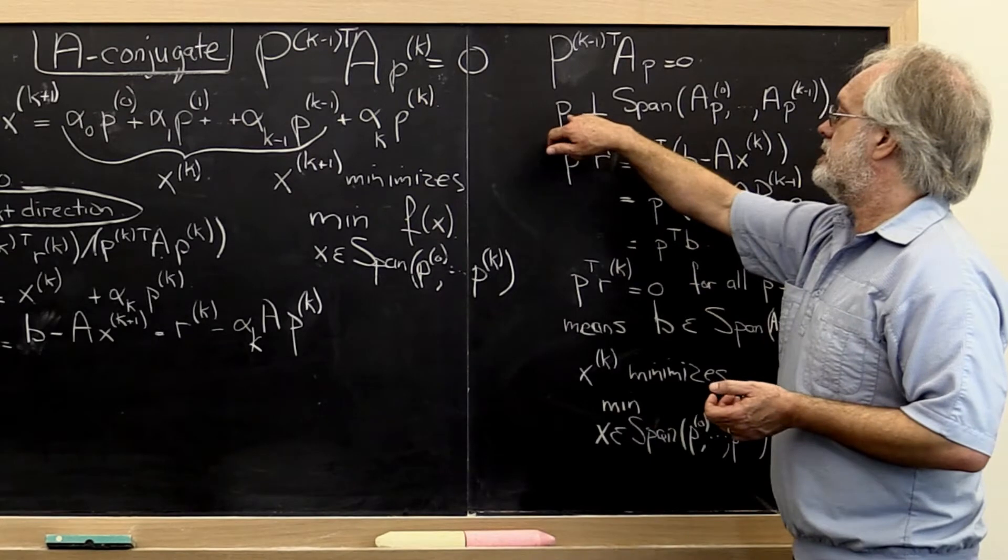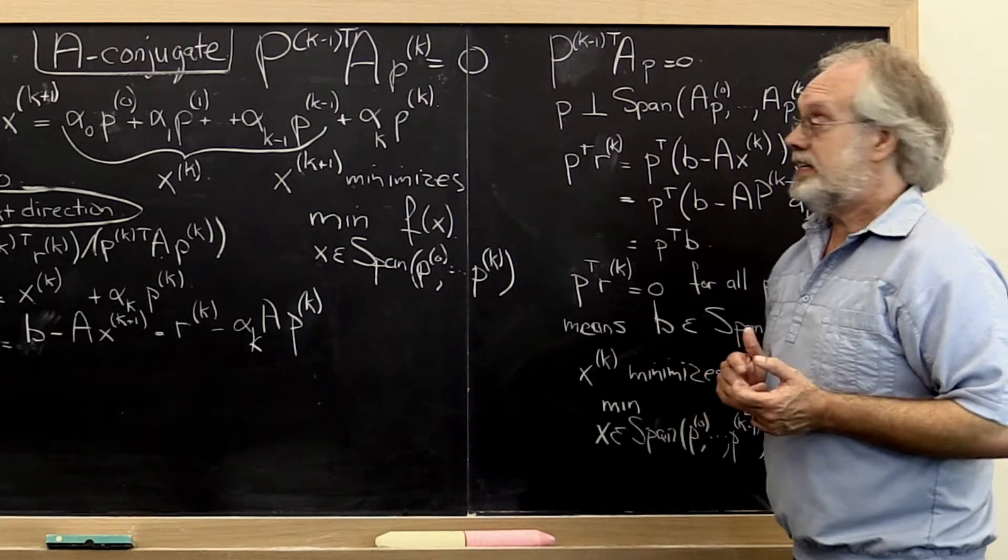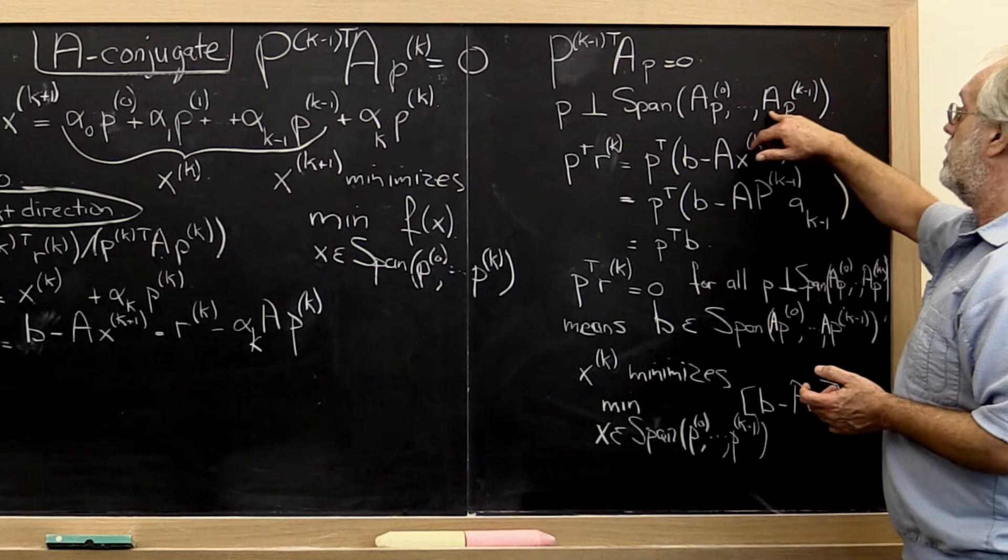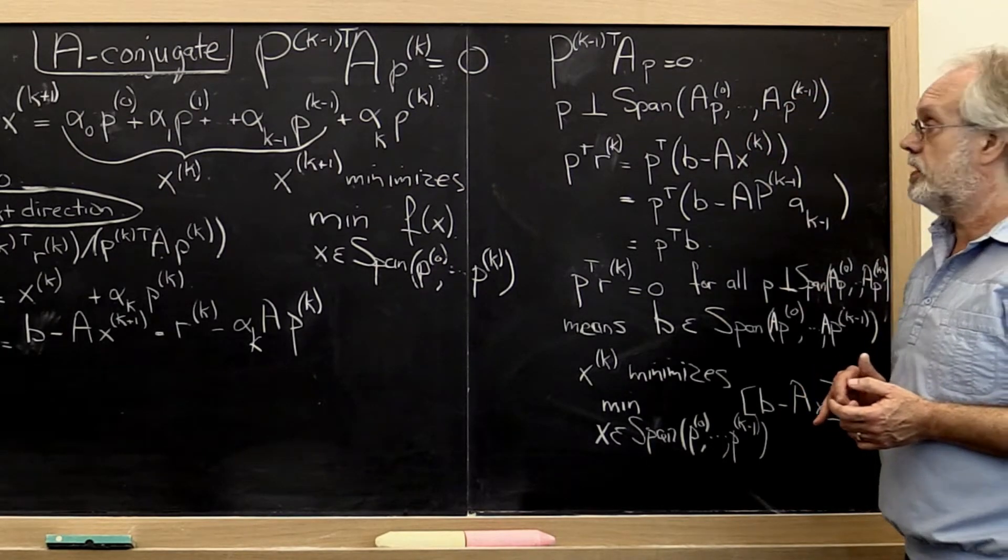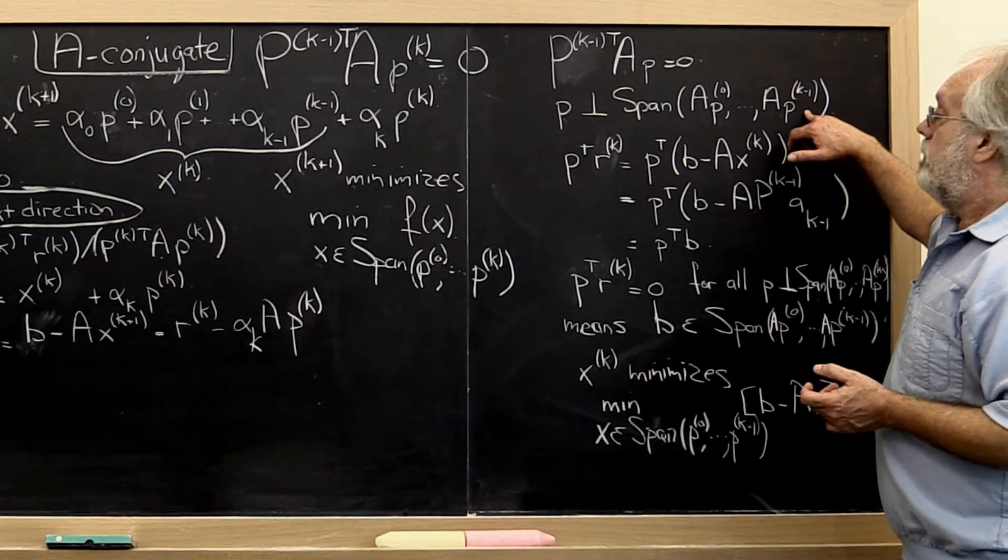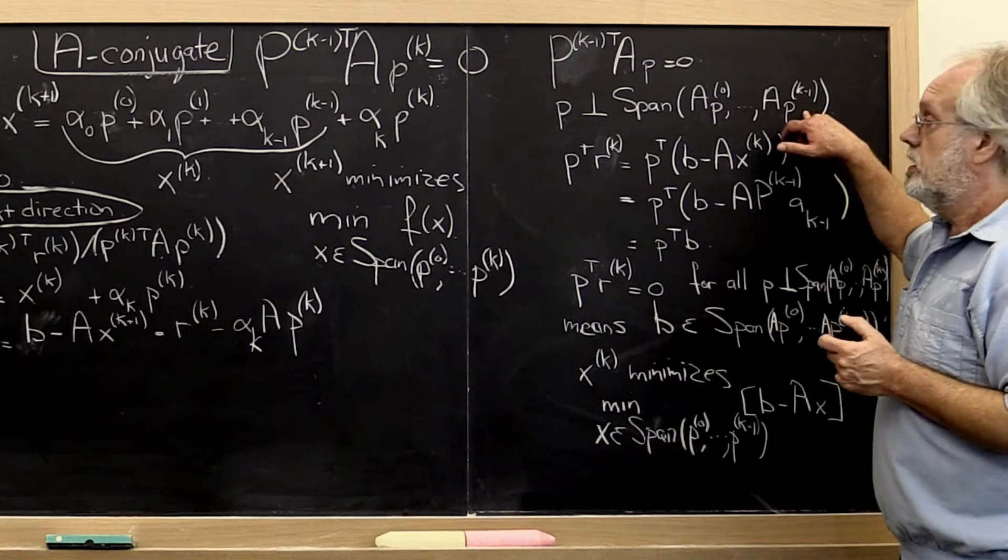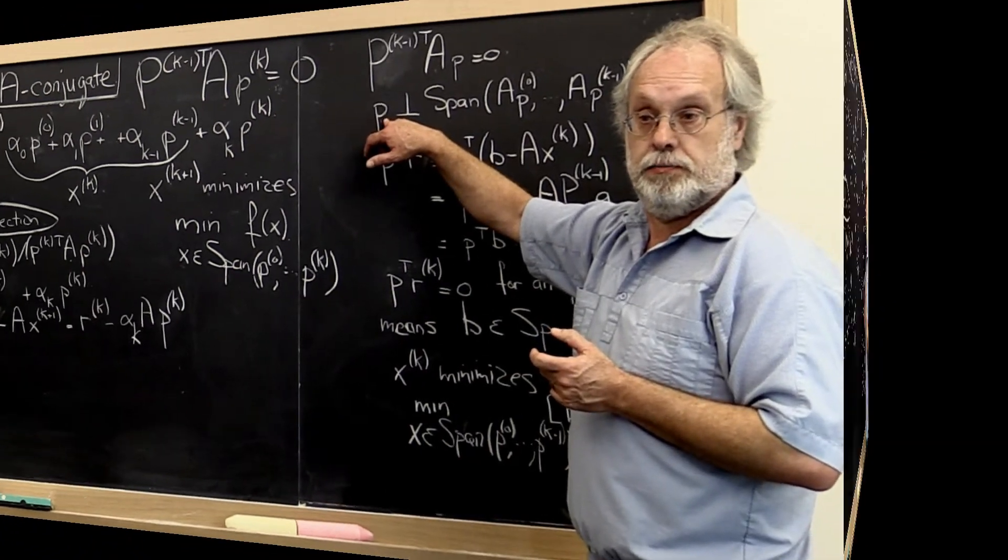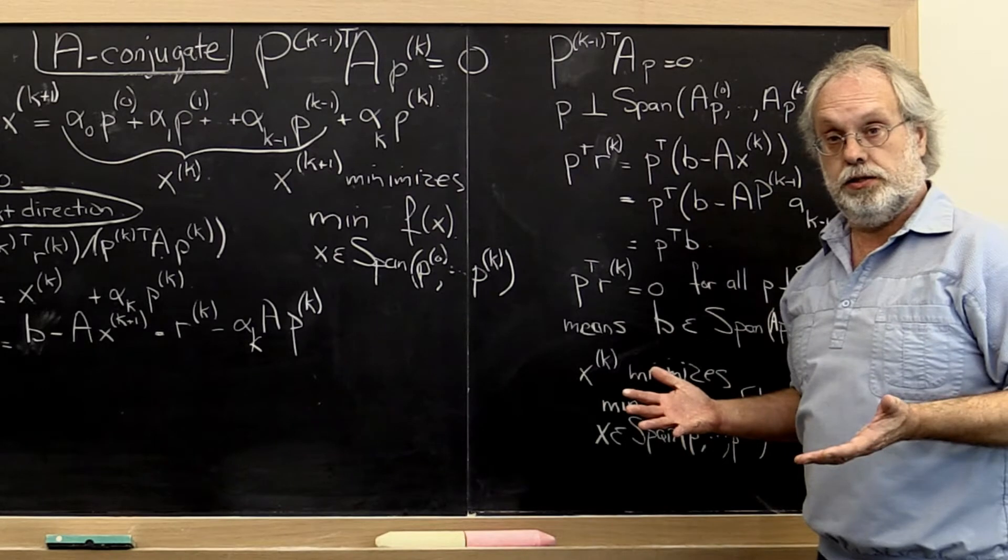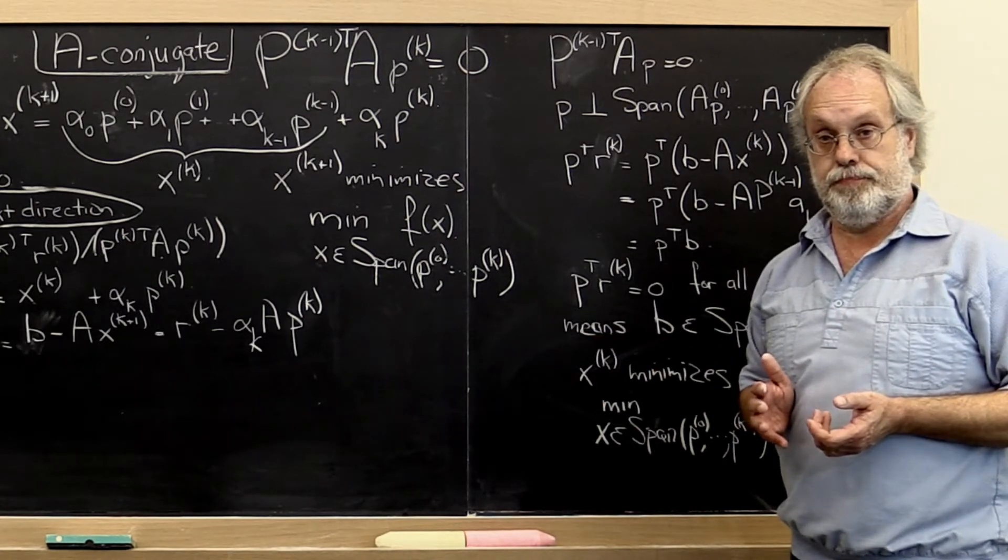The first question is, if we look at the set of all vectors that are a perpendicular to the previous search directions, that's really saying that it's the set of all p that are perpendicular to the span of a times the first search direction, etc., all the way through a times the last search direction. If there are at most n minus 1 of these, then this at most spans an n minus 1 dimensional space and therefore there should be vectors that are perpendicular to it, as long as we haven't already explored n of those so far.